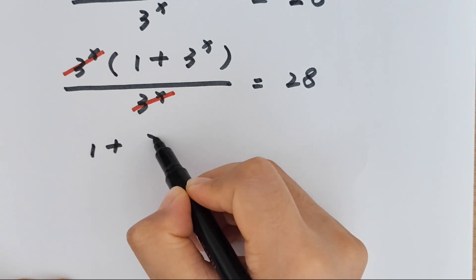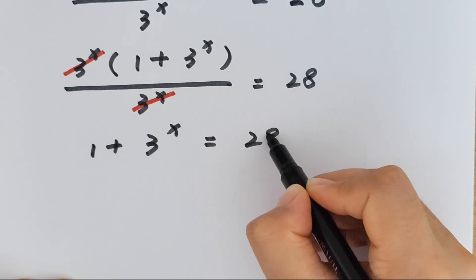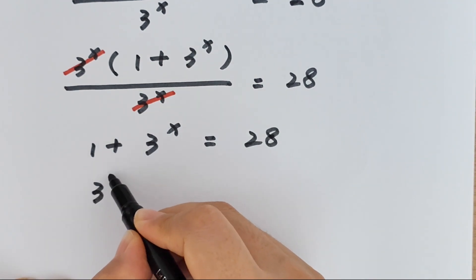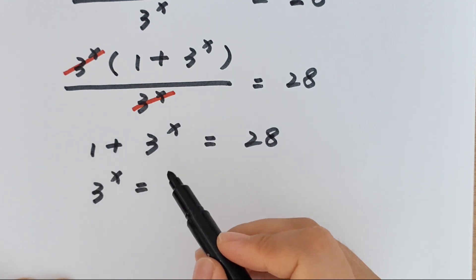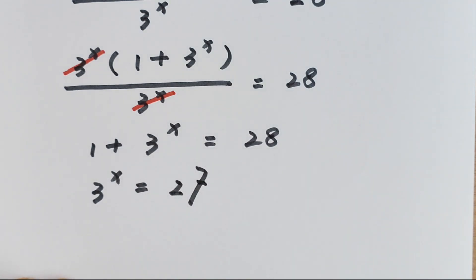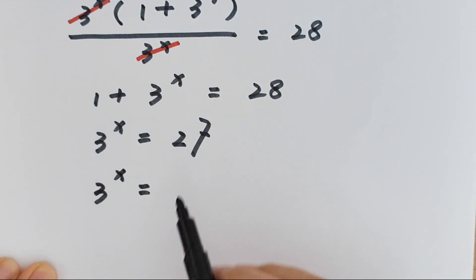So 1 plus 3 to the power of x equals 28. 3 to the power of x equals 28 minus 1 is 27. 3 to the power of x equals 27.